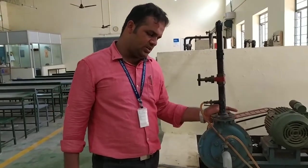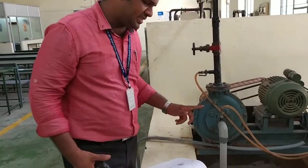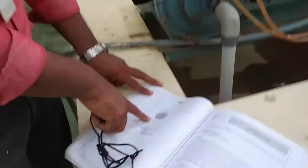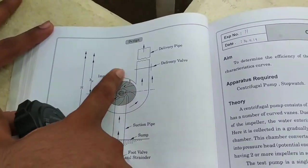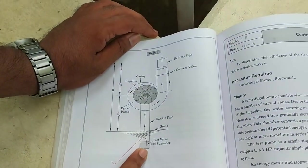This is the construction of centrifugal pump. This is impeller casing which has impeller inside, and this is your inlet pipe which has foot valve strainer.